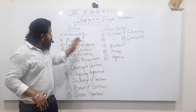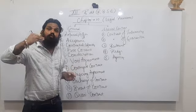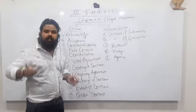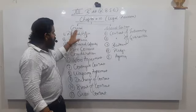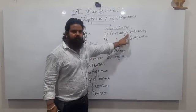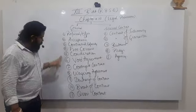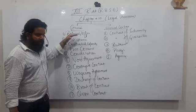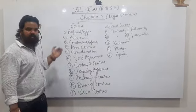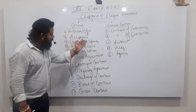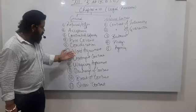But we have to learn deep about the rules and regulations. In the last chapter, we discussed general and special contracts. In general, we have to complete the total 11 points. We have to complete the offer rules, acceptance rules, contractual capacity rules, and free consent. These are all considerations.